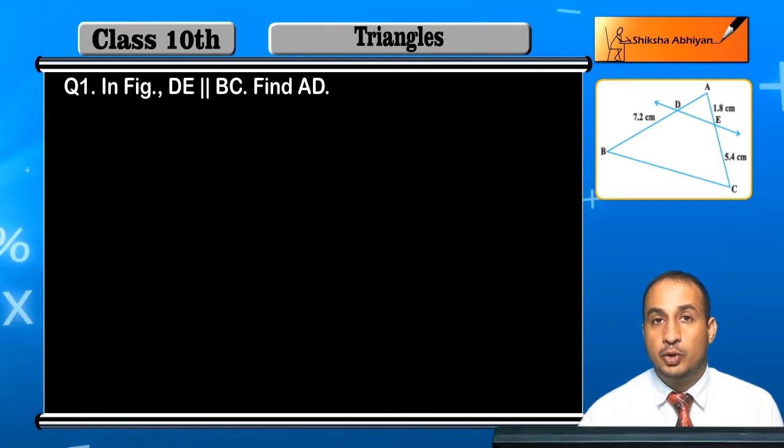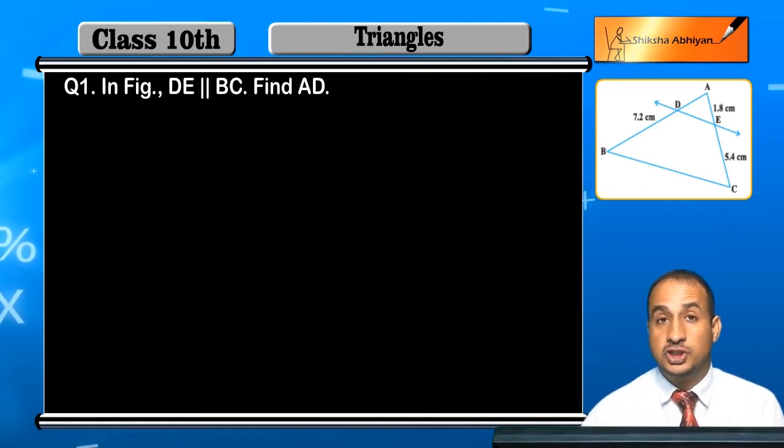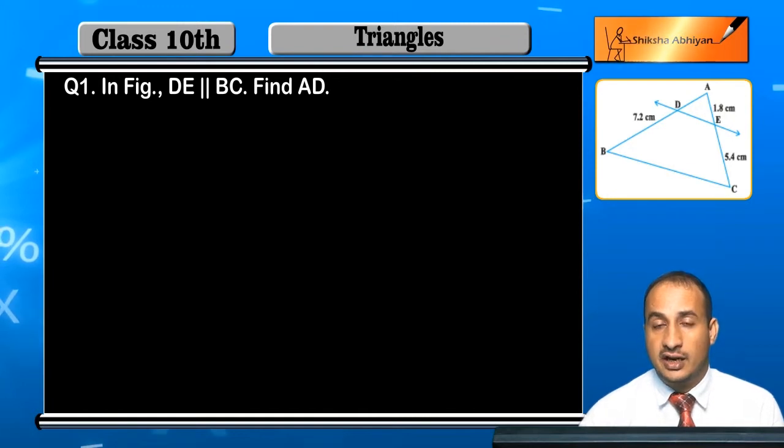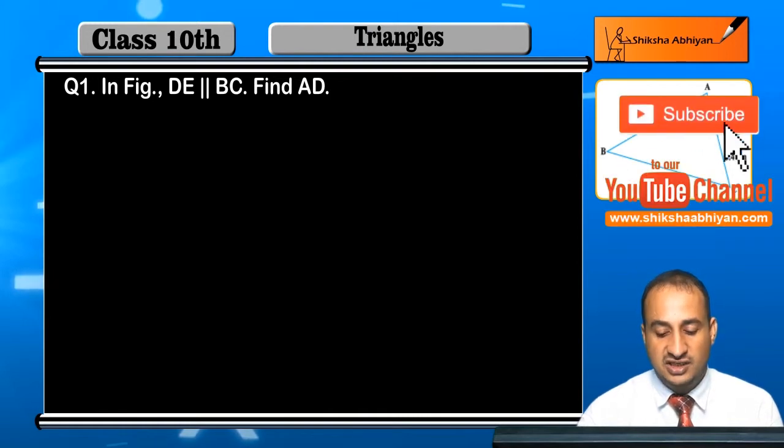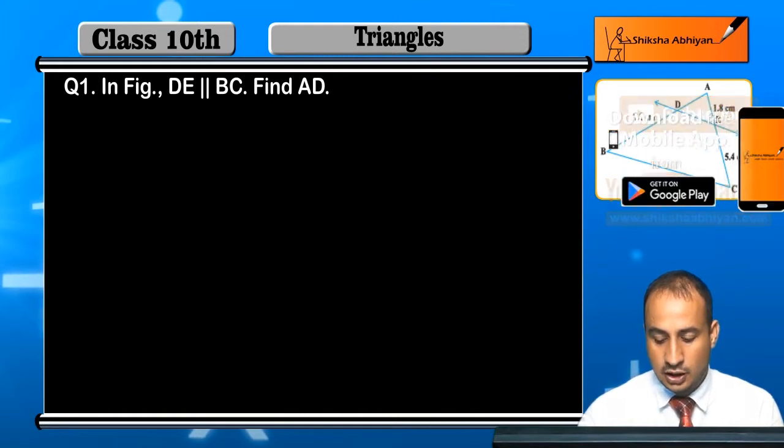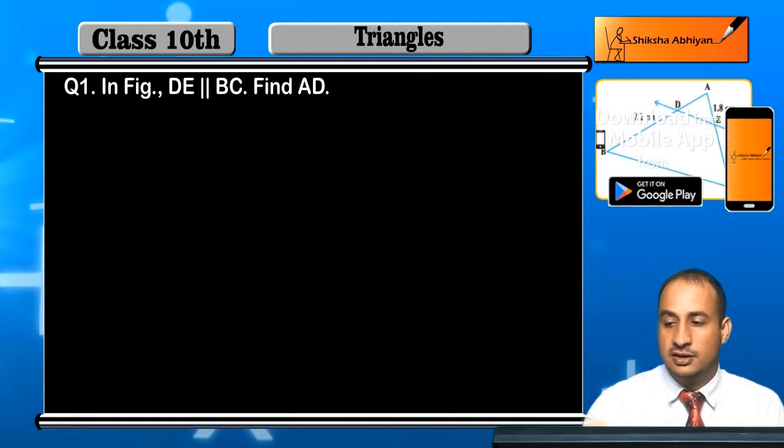Student, if you recall the first theorem we have done on Basic Proportionality - when a line is parallel to one side of a triangle, it divides the other lines in proportion. So we will use that theorem here. When it is proportional, AD upon DB is equal to AE upon EC. We can do this here.